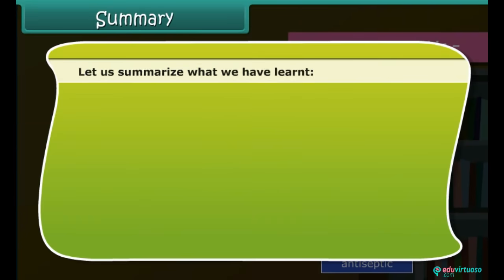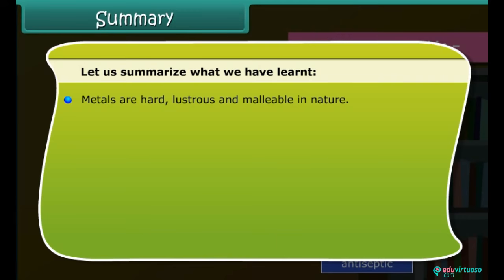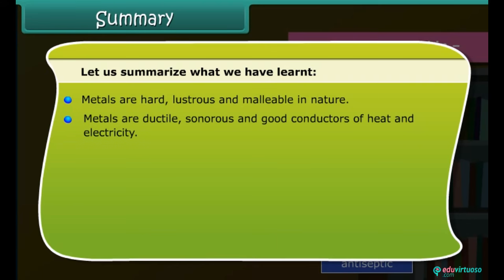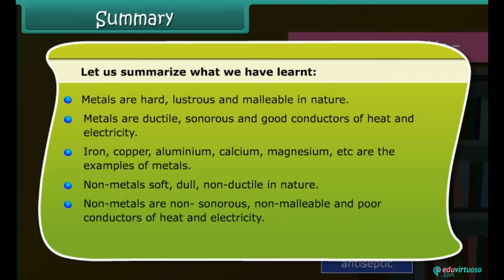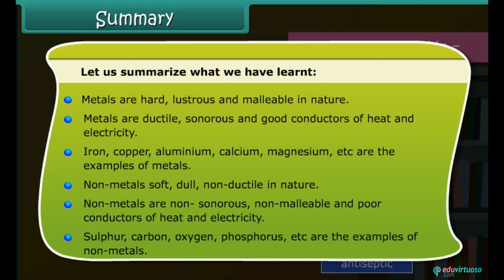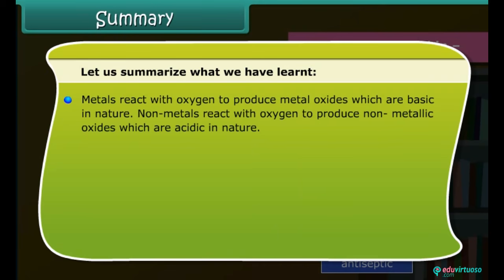Summary: Let us summarize what we have learned. Metals are hard, lustrous, and malleable in nature. Metals are ductile, sonorous, and good conductors of heat and electricity. Iron, copper, aluminium, magnesium, etc. are examples of metals. Non-metals are soft, dull, and non-ductile in nature. Non-metals are non-sonorous, non-malleable, and poor conductors of heat and electricity. Sulfur, carbon, oxygen, phosphorus, etc. are examples of non-metals.